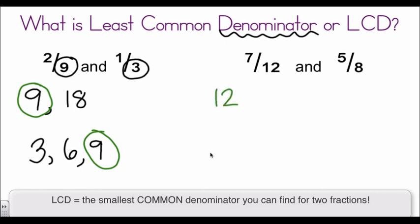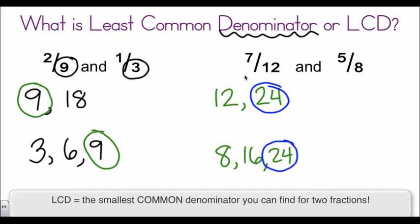Let's try for 12 and 8. Again, I'm going to start with the larger number. The reason I start with the larger is I've already hit the multiple that I know 8 can go into. So once I start listing out my multiples of 8, I'm going to hit that 24 right away. So the smallest denominator or the least common denominator for 7/12 and 5/8 is 24.